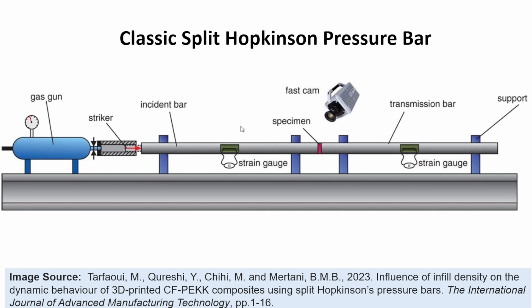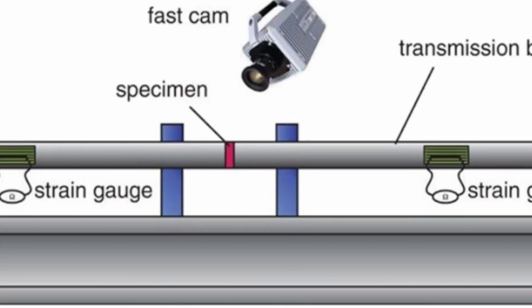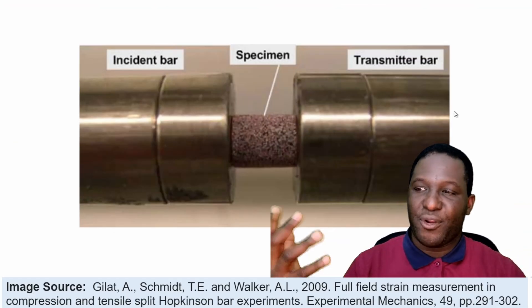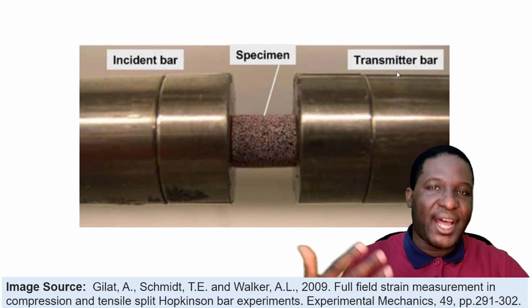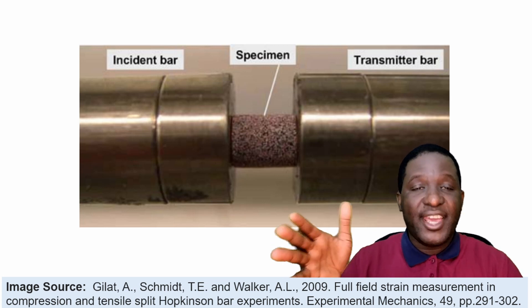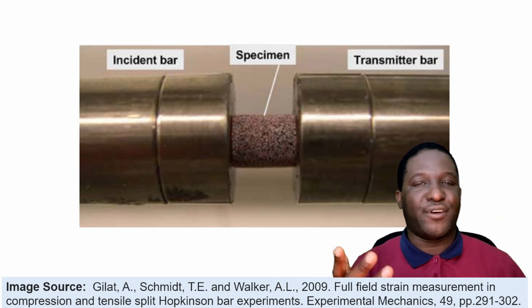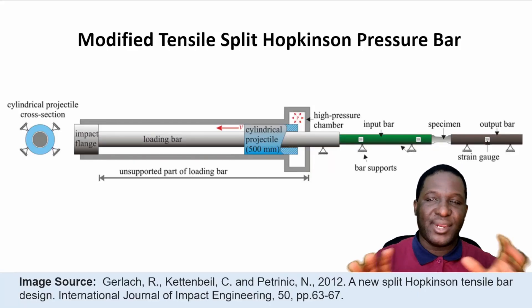In some cases, you may also need a high-speed camera to visualize what is happening at dynamic rates, since the testing speed means you can't visually observe it in real time. The key thing about the classic Split Hopkinson Pressure Bar is that the specimen in the middle undergoes compressive behaviour — the incident bar crushes the specimen and some wave transmits to the transmission bar. This is just a compression setup, but what Brian really wants is to investigate tensile behaviour, so a modification is needed.